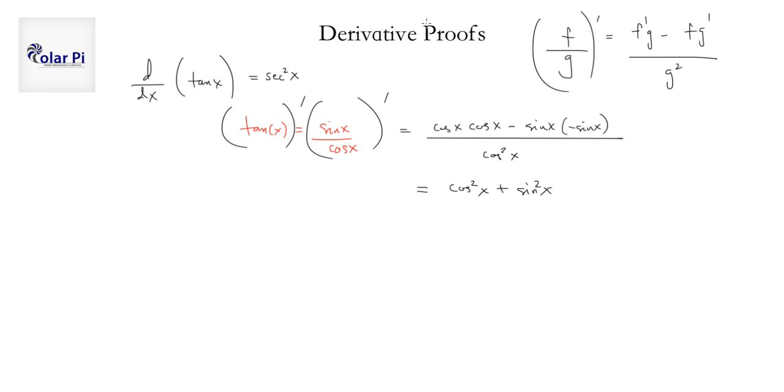Oh, nice. We know that. That's one of the first things we learn in trig identities by the Pythagorean identity of trigonometry. The numerator is equal to one, so we've got that this is one over cosine squared x.